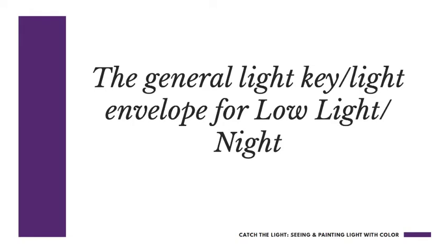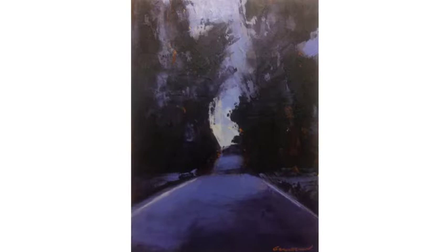Now we're going to talk about the general light key and light envelope for low light and night. Let's look at this painting of a nighttime scene along a rural highway and think about our four aspects of color — hue, value, intensity, and temperature — and how the nighttime situation is affecting each of them.